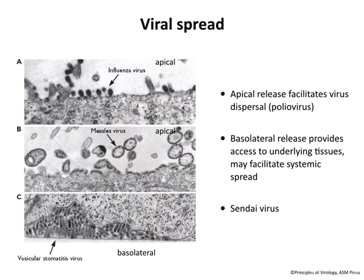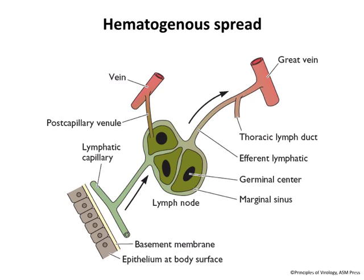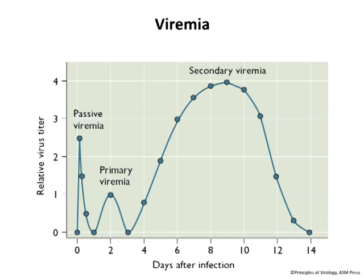Once a virus has replicated in a body surface epithelium and traversed the basement membrane, it's in the sub-epithelial tissues, which are highly vascularized. Most viruses get taken up into the lymphatic capillaries, which are very permeable and everywhere. The virus is then moved through the lymph circulation, through lymph nodes, and then to the blood circulation, where it can have access to any tissues. Viruses could also get into blood capillaries, but they're less permeable than lymph capillaries. The virus then goes everywhere — it takes a ride in the circulation — and that gives us viremia, or virus in the blood.